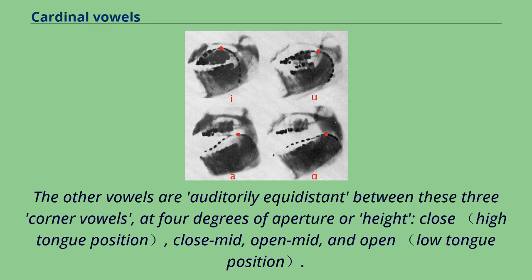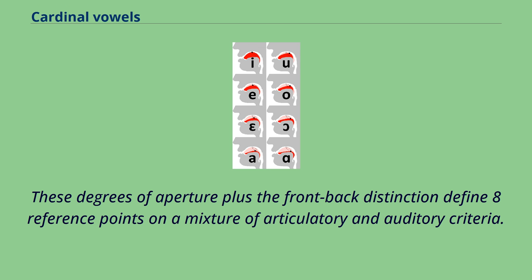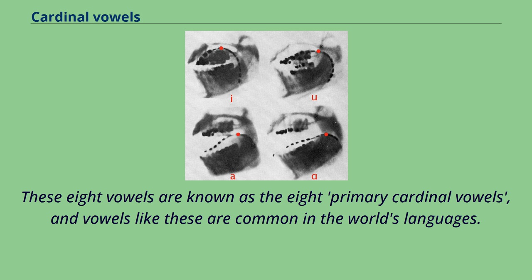The vowel a is produced with the tongue as low and as far back in the mouth as possible. The other vowels are auditorily equidistant between these three corner vowels at four degrees of aperture or height: close, close-mid, open-mid, and open. These degrees of aperture plus the front-back distinction define eight reference points on a mixture of articulatory and auditory criteria, known as the eight primary cardinal vowels — sounds common in the world's languages.